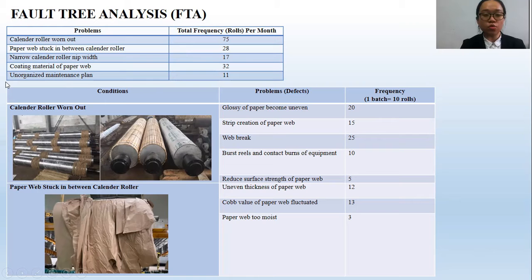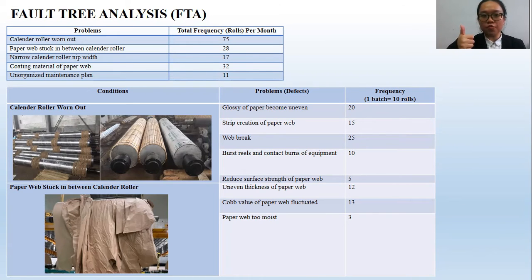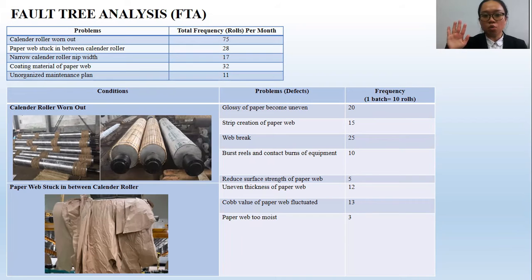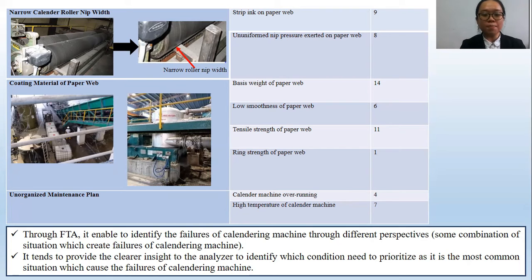Chapter 4: Results and Discussion. First, the Fault Tree Analysis (FTA) found five different problems in the paper manufacturing industry relating to calendering machine failure. The calendar roller worn out had the highest frequency at 75 occurrences per month. Paper web stuck between the calendar roller had 28 occurrences per month. Narrow calendar nip width had 17 per month. Coating material of the paper web had 32 per month. Unorganized maintenance plan had 11 per month. FTA enabled the identification of failures from different perspectives and helped prioritize the most significant issues.